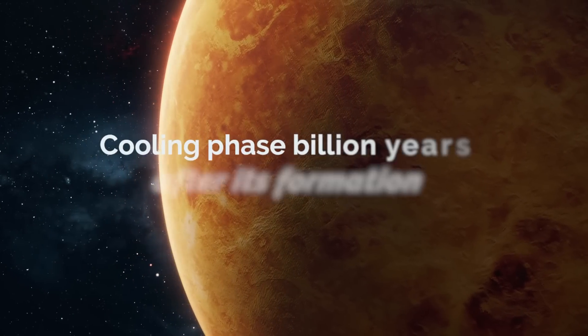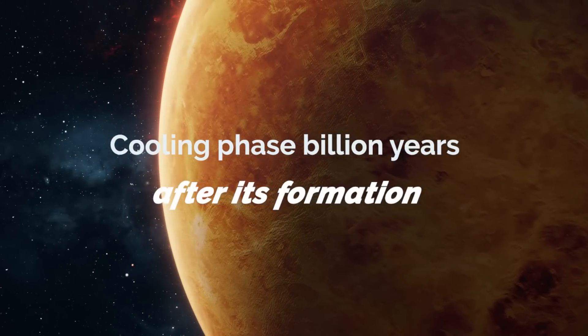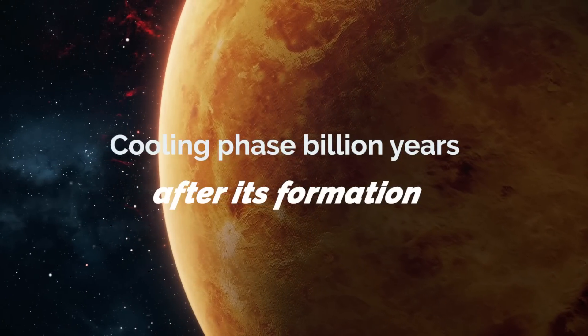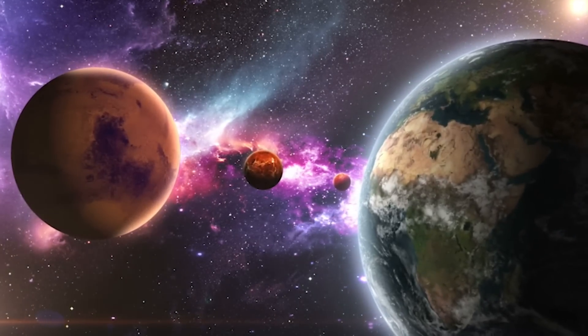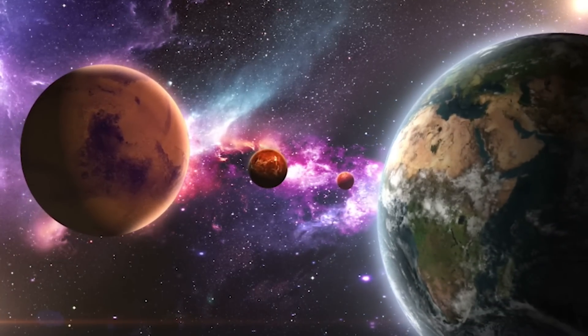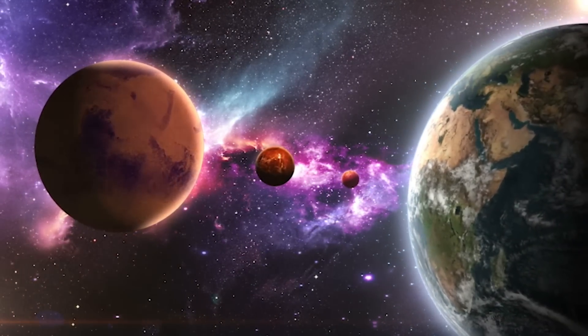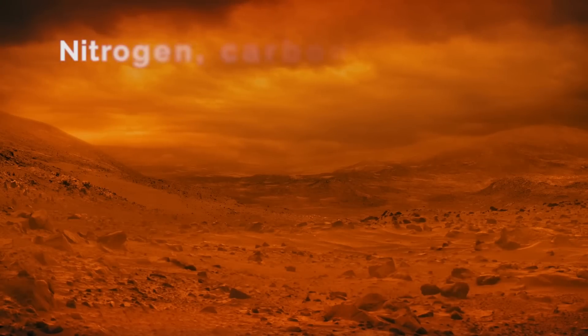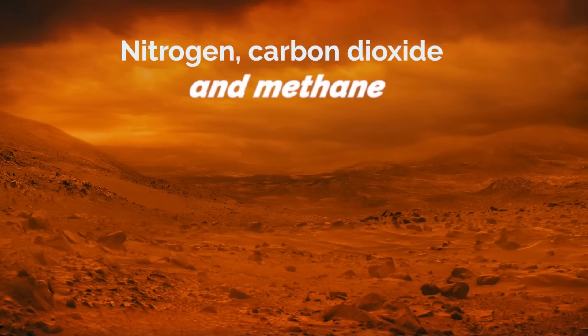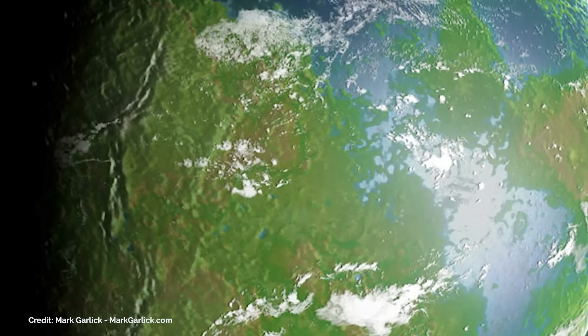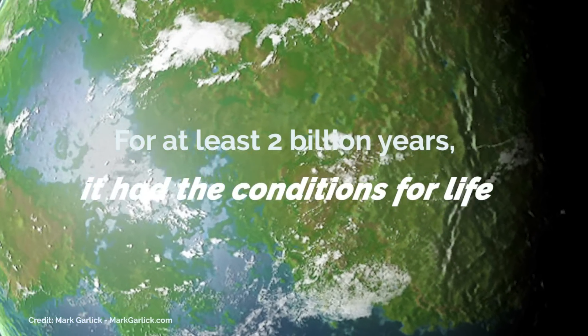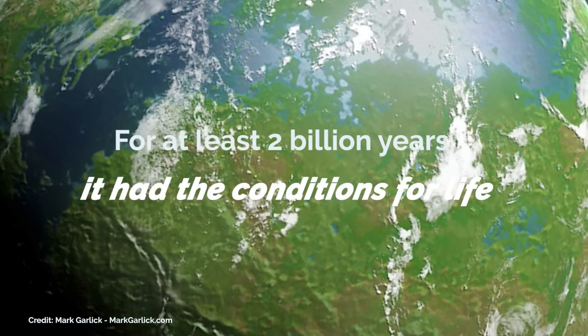Simulations suggest that Venus underwent a rapid cooling phase a few billion years after its formation. Then the atmosphere would have been filled with carbon dioxide. If Venus evolved in a similar way to Earth, that carbon dioxide would have descended from the atmosphere, attracted by silicates, and would have been trapped on the surface. This would have allowed the atmosphere to be filled with nitrogen with small amounts of carbon dioxide and methane, providing stability. This would indicate that for at least 2 billion years, Venus had the necessary conditions to host liquid water, oceans, and possibly living beings.